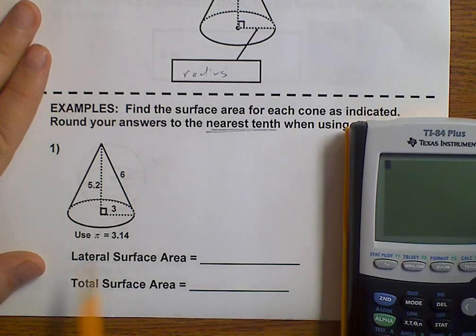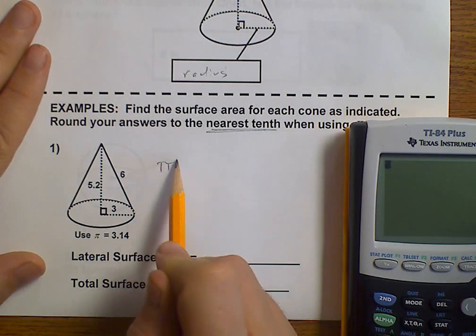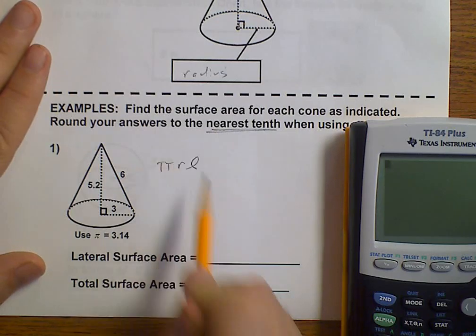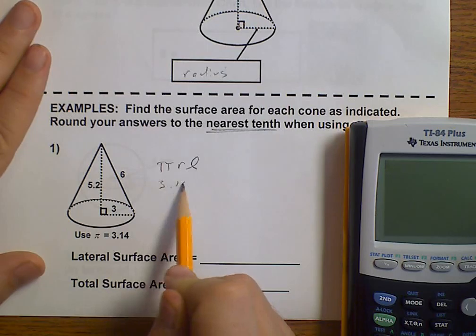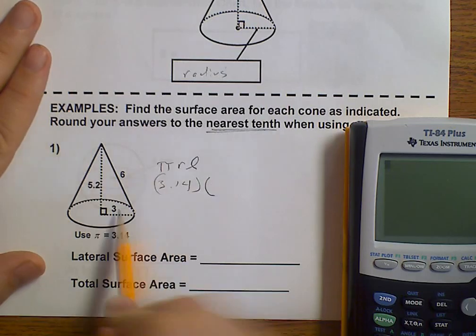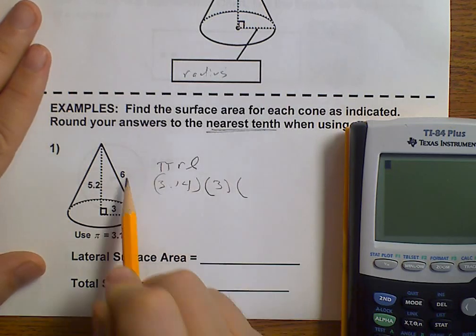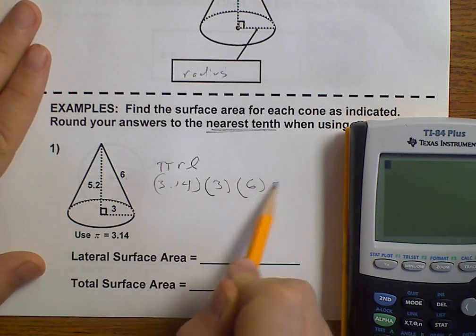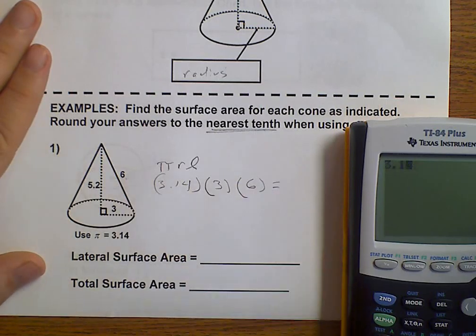So, our lateral surface area, that would be pi times our radius times our slant height. That's 3.14 times our radius of 3 times our slant height of 6. And that equals 56.52.